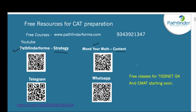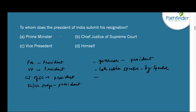First question: To whom does the President of India submit his resignation? Options are Prime Minister, Chief Justice of Supreme Court, Vice President, or himself. The President of India submits his resignation to the Vice President. You should also know that the Prime Minister, Vice President, Governor, Chief Justice of Supreme Court, and High Court or Supreme Court judges all submit their resignation to the President of India. The Lok Sabha Speaker submits resignation to the Deputy Speaker.